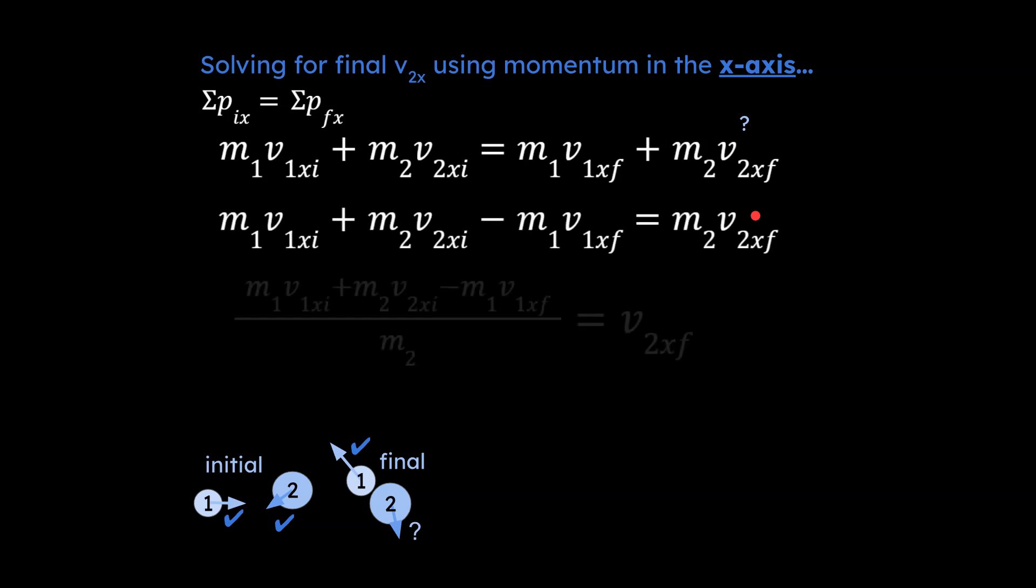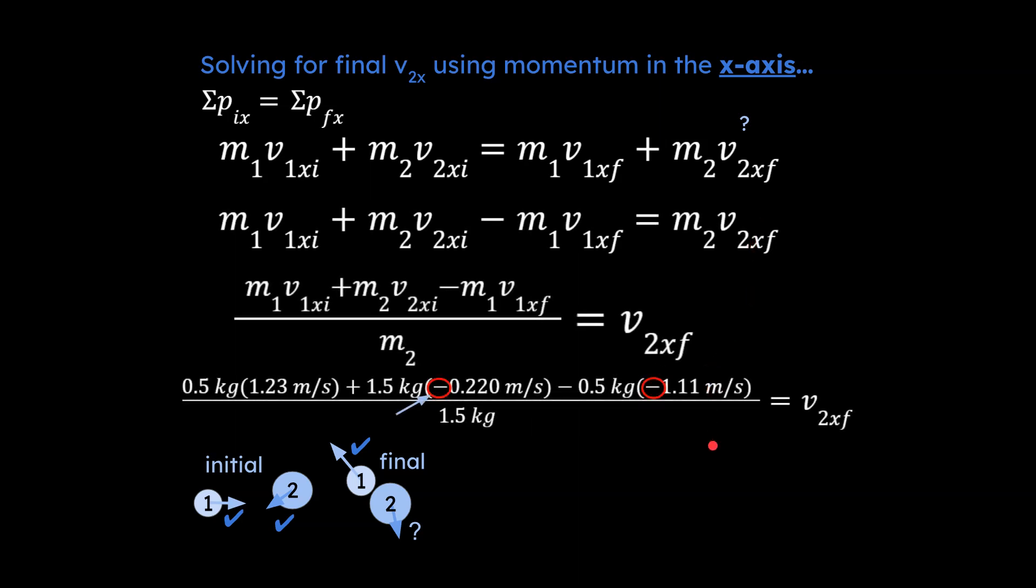What we're looking for is v2x final, so we want to isolate for that. So I'm going to show the work for isolating for that variable, and once we've isolated we're ready to plug in our numbers. It's really crucial at this point that you make any of the velocities that should be negative, negative. That's what I've done here, and when you plug in your numbers this is going to be your answer for v2 in the x final.